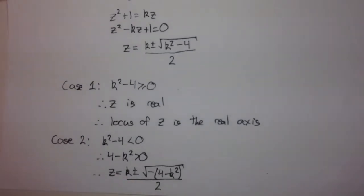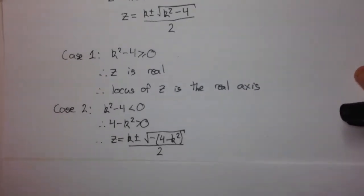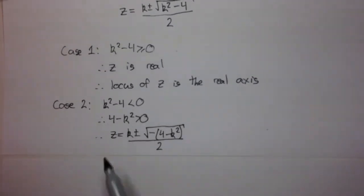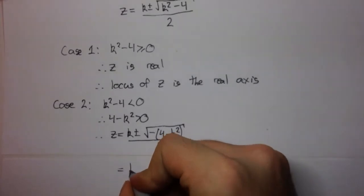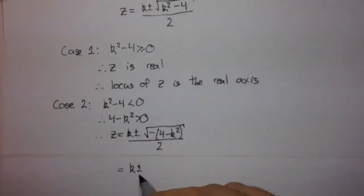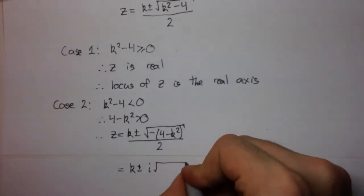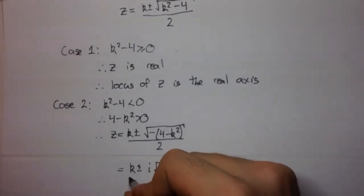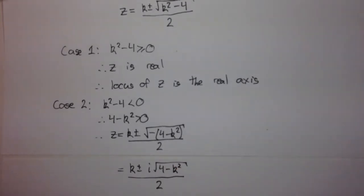Okay, now, we just said that this up here was positive. So, we can split this up into the square root of minus 1 times the square root of 4 minus k squared. But, of course, we know that the square root of minus 1 is i. So, we're going to have i times the square root of 4 minus k squared over 2. So, that's what z is equal to.